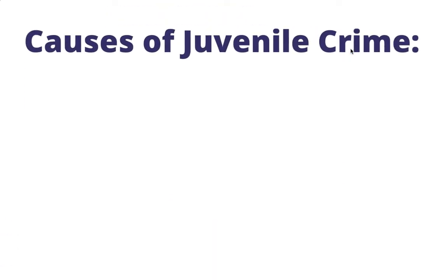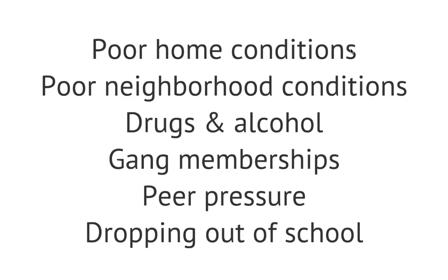Causes of juvenile crime: poor home conditions and poor neighborhood conditions are a big cause. If your parents or the people around you are constantly committing crimes or breaking the law, you are more prone to do those things as well. Drugs and alcohol — especially in your household — also contribute more likely to juvenile delinquency. If your parents aren't paying attention to what's going on with you because they're on drugs and alcohol, or if they offer you drugs and alcohol, you are more likely to become a juvenile delinquent.